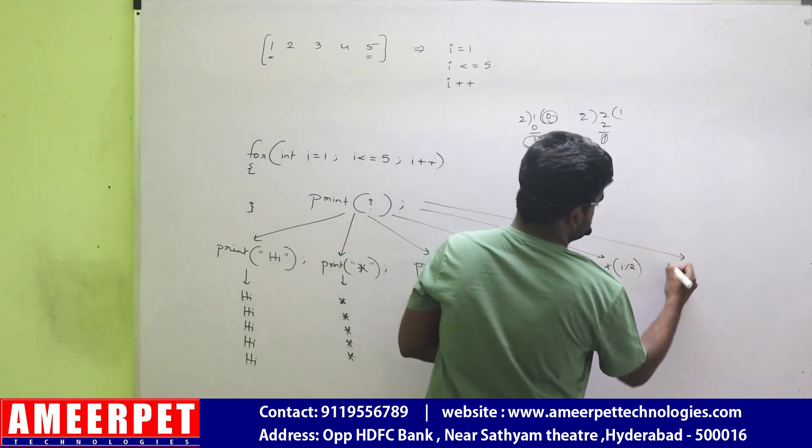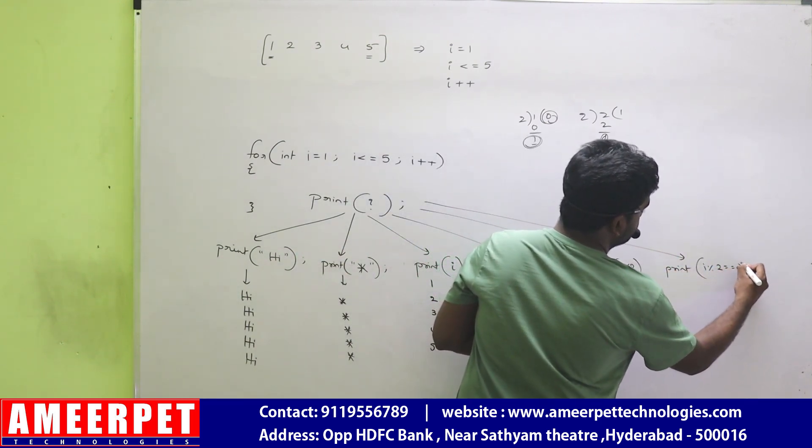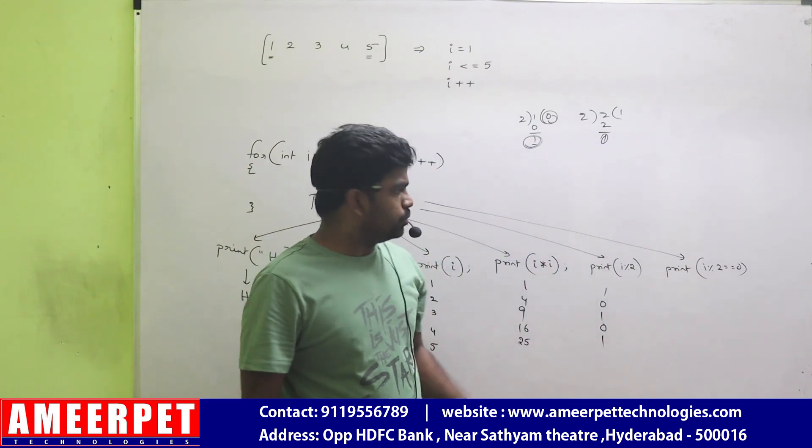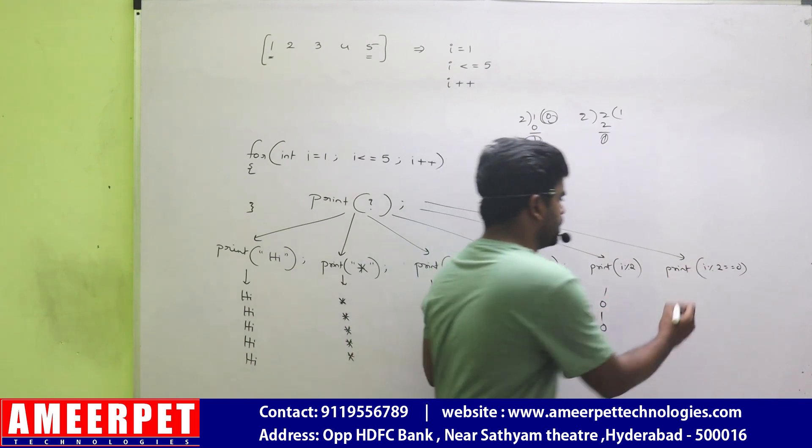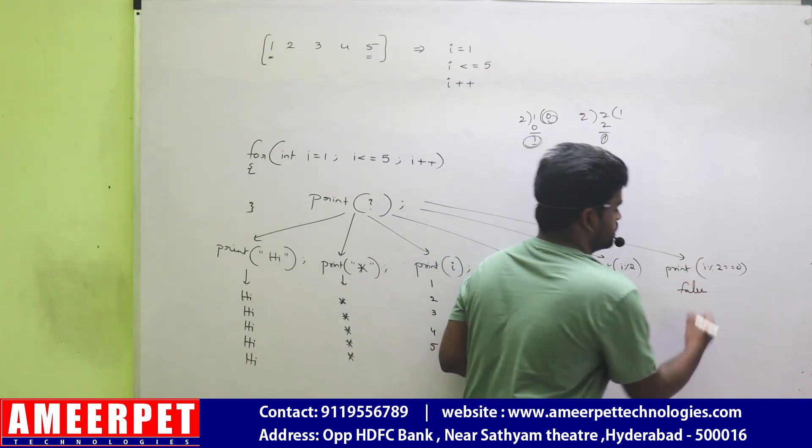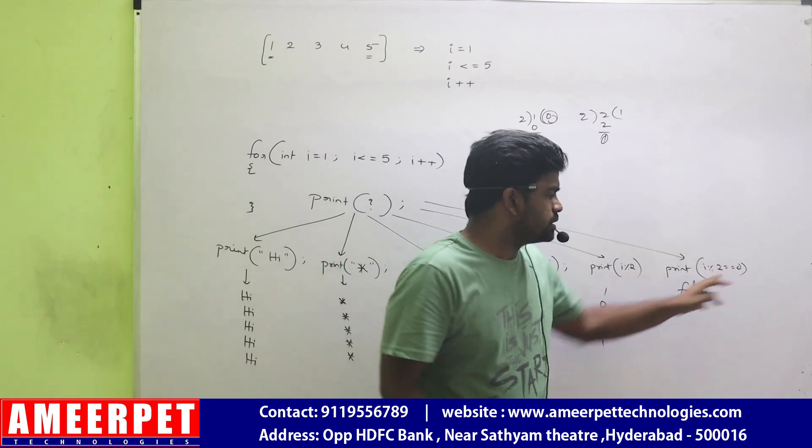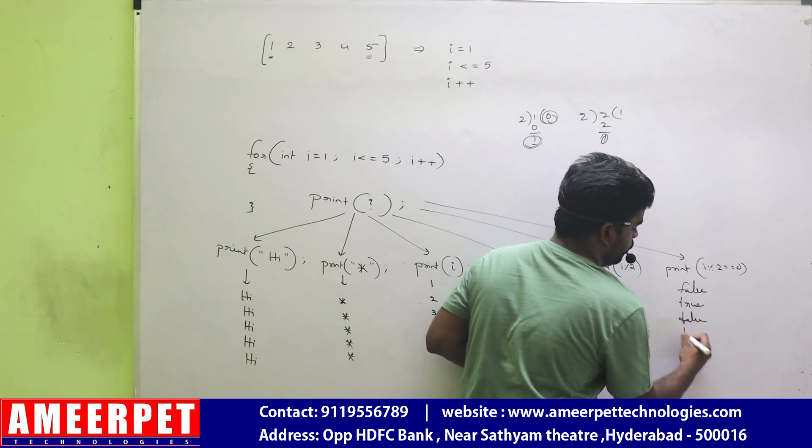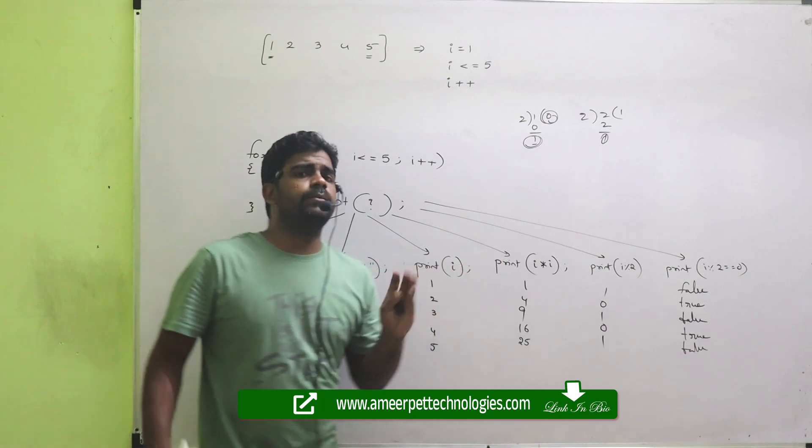Suppose if I am writing print I mod 2 equal to 0. Now what? I mod 2. Suppose 1 mod 2, 1. 1 equals to 0? No, it's false. Next I value 2. 2 mod 2, 0. Yes, 0 equals to 0, yes, true. 3 mod 2, false. 4 mod 2, true. 5 mod 2, false. See what I am trying to explain.